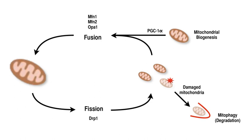Mitochondrial biogenesis is the process by which cells increase mitochondrial mass. It was first described by John Holochah in the 1960s, when it was discovered that physical endurance training induced higher mitochondrial content levels, leading to greater glucose uptake by muscles. Mitochondrial biogenesis is activated by numerous different signals during times of cellular stress or in response to environmental stimuli, such as aerobic exercise.